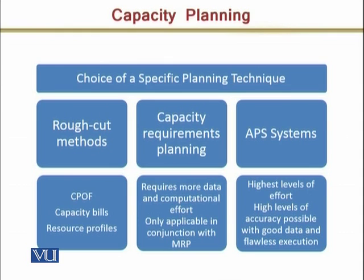اگر product mix similar ہے تو least sophisticated method — capacity planning using overall factors — manually بھی calculate ہو سکتا ہے۔ Accounting system کی analogy لیں: جب trial balance develop ہو رہا ہوتا ہے تو accountant پانچ پیسے کا فرق بھی find out کرتا ہے، جبکہ ایک business executive کہتا ہے 90% accuracy بھی okay ہے، ball park figure بتائیں۔ تو depending upon situation، accuracy کتنی چاہیے — 95% سے زیادہ accuracy achieve کرنے میں double time لگ سکتا ہے — اس basis کے اوپر determine کرنا ہوتا ہے کہ کون سی technique use کرنی ہے۔